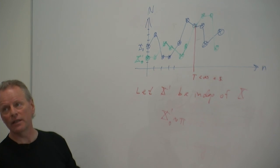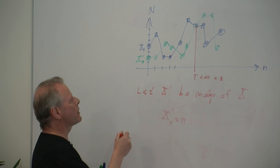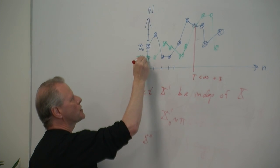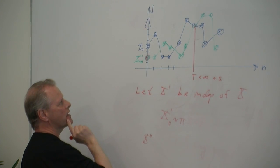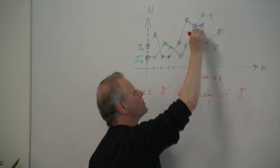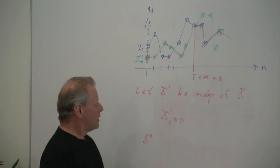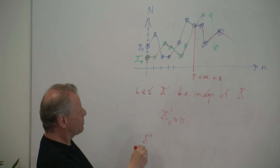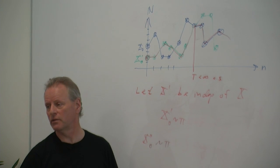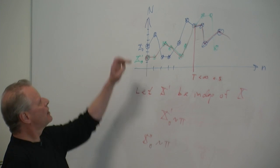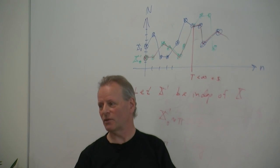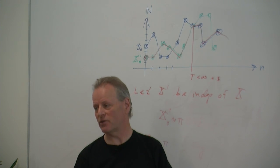Define a new chain X double prime this way: start in the same state as X prime starts, let it follow X prime until it hits the blue chain, then switch to the blue chain. This X double prime is a Markov chain and it's got initial distribution pi, so it is also stationary. So what we have here: the blue chain develops through time and in the end hits a red chain which is stationary. So the blue chain is asymptotically stationary — it behaves like a stationary chain in the end.